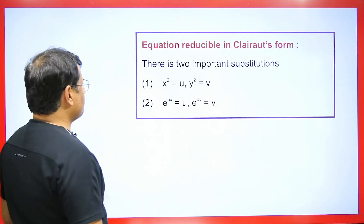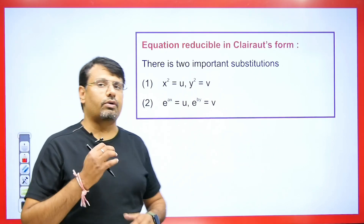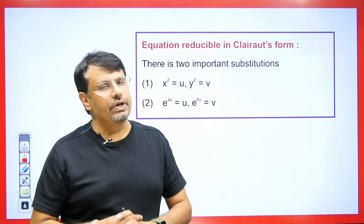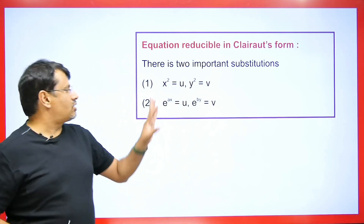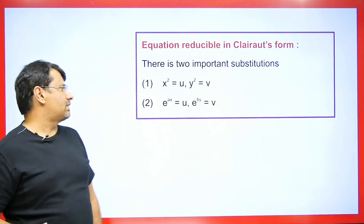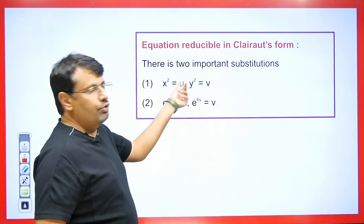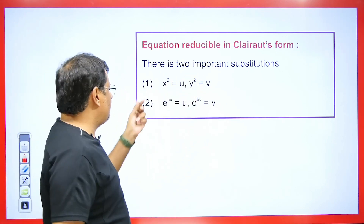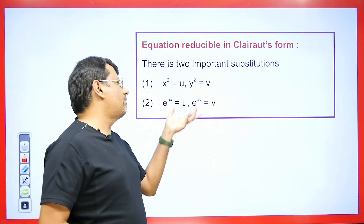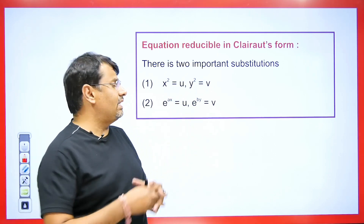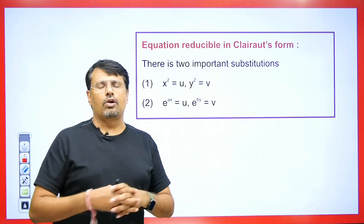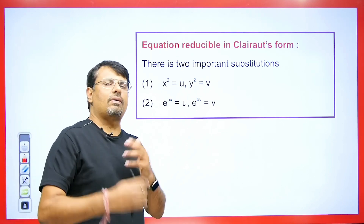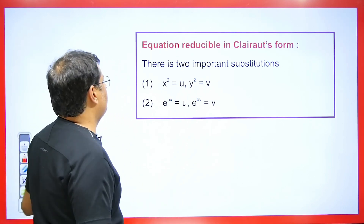Sometimes the question we get is not given in Clairaut's form, so we can reduce it to Clairaut's form. There are two types of transformations: we can take x² as u and y² as v, or take e^(ax) as u and e^(by) as v. Using the method of substitution, we can easily convert the equation into Clairaut's form. Let me explain an example.